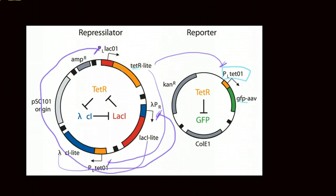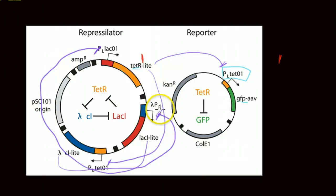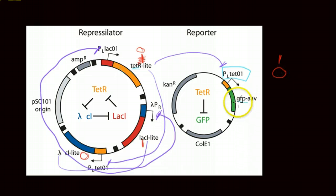Say I have TetR present in my cell — GFP is not going to be expressed, so I'll have a zero output, meaning GFP is not being expressed. TetR inhibits Lambda CI production; if Lambda CI is being inhibited, it's not produced, which means it does not bind to Lambda PR, which means LacI can be produced. So LacI is at a one — it's present in the system and comes around to repress TetR production, switching TetR to zero. When TetR is absent, GFP can be produced, so we'll denote GFP expression as zero.